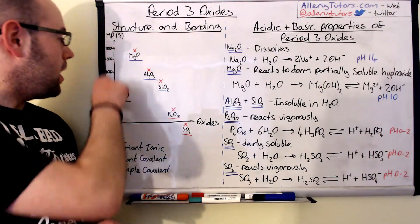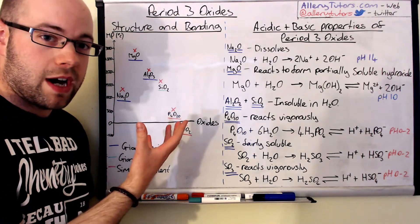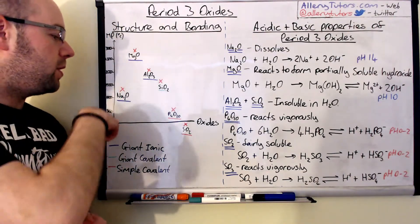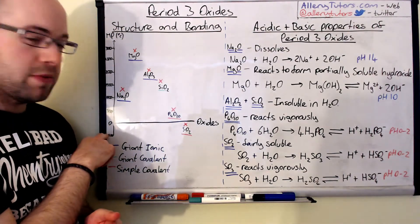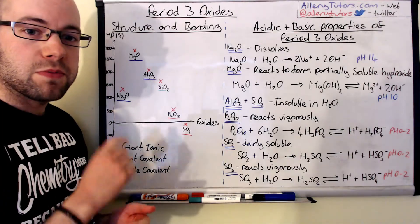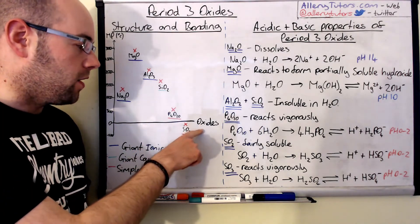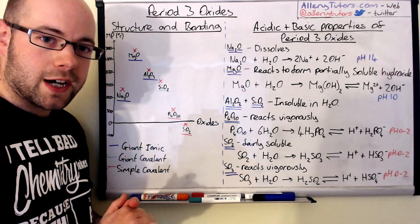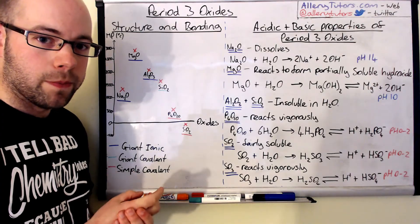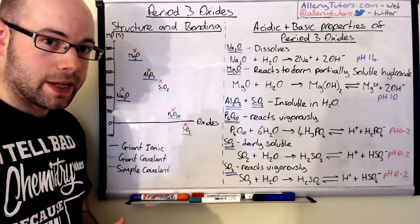So we're going to start with what we've got here which is our graph, and this shows us the melting point in degrees Celsius. We've got some negative values here as well, and we've also got our oxides. I'm going to put the oxides that can naturally form that we're actually interested in for the exam board.